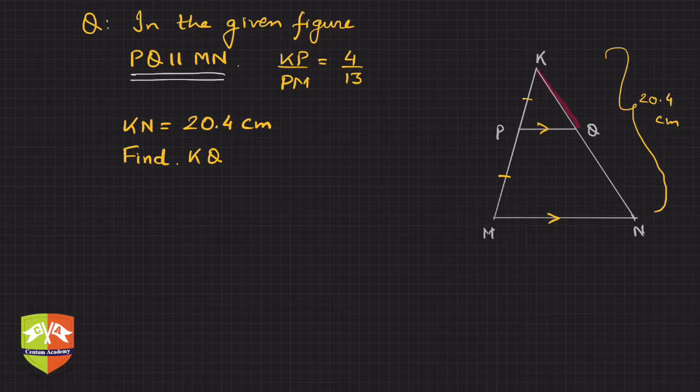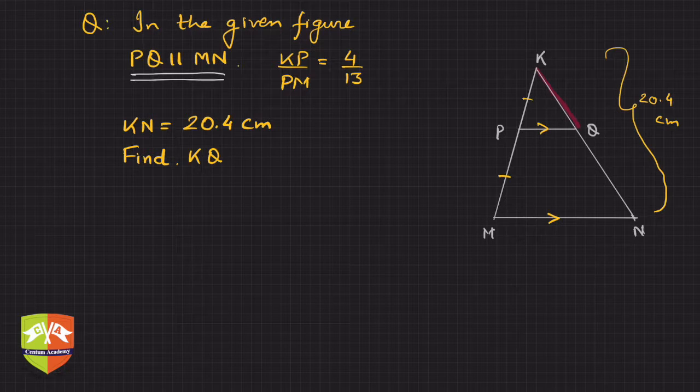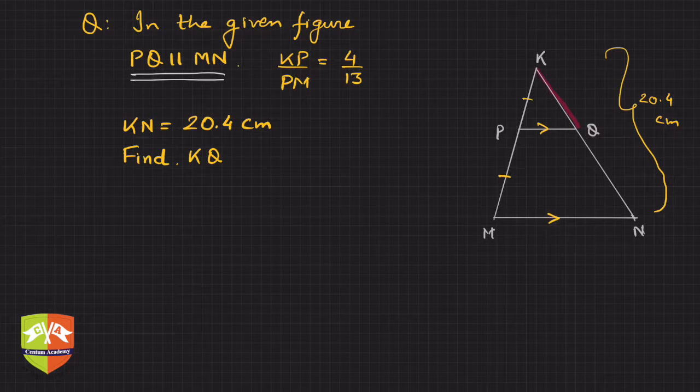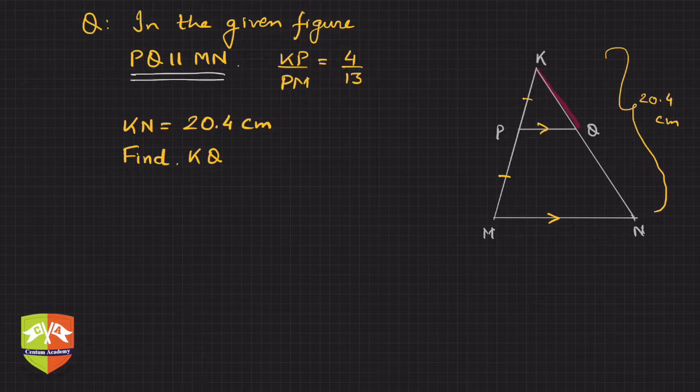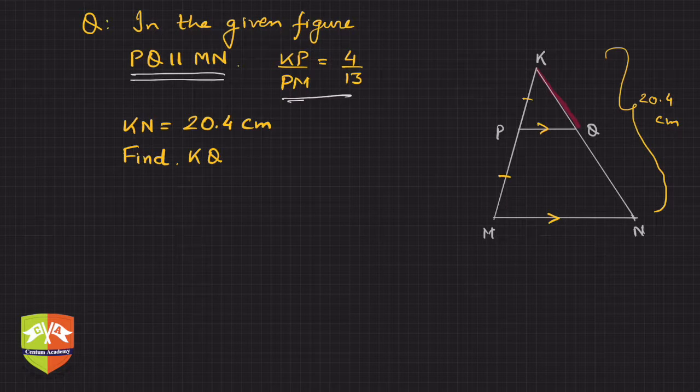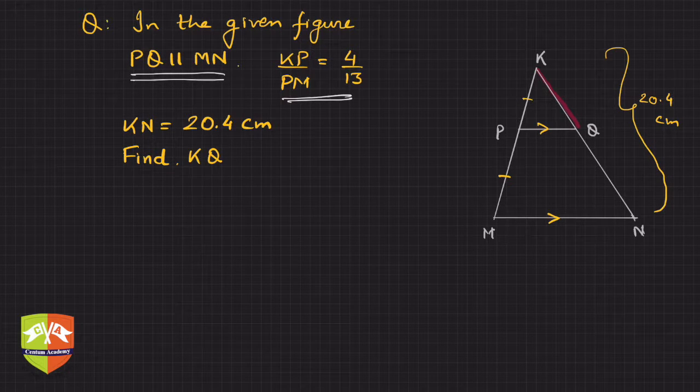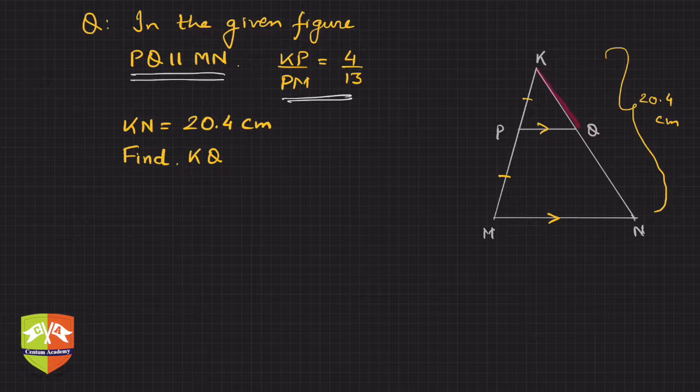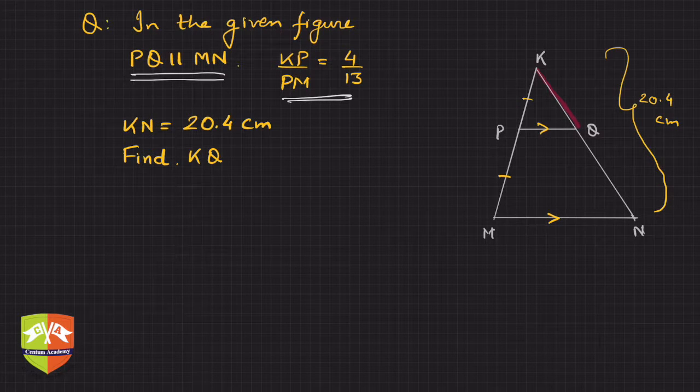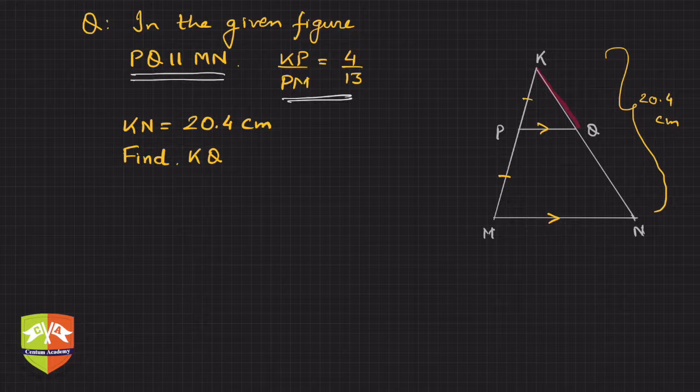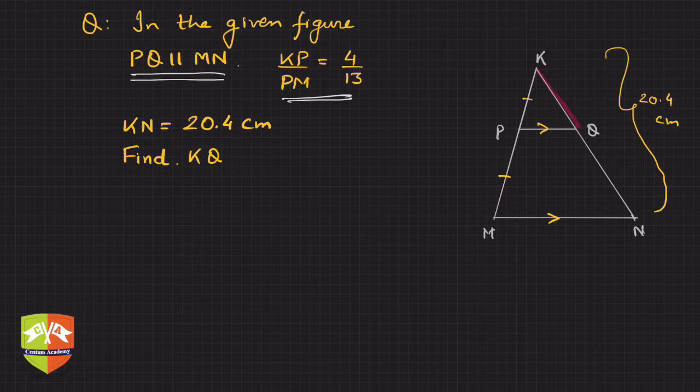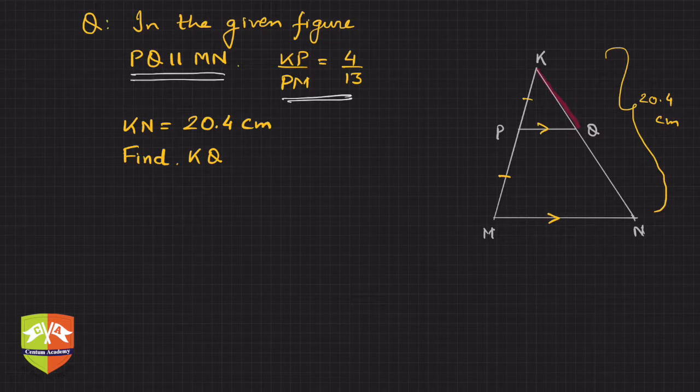Clearly, the moment I see a triangle and then PQ is parallel to MN, the first thing which comes to my mind is Basic Proportionality Theorem or Thales Theorem. And they're also talking about ratios, and Basic Proportionality Theorem also talks about ratios. So hence, this question probably requires the application of Basic Proportionality Theorem or Thales Theorem.